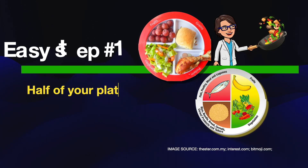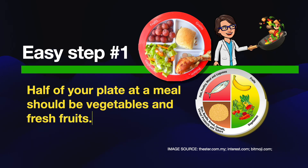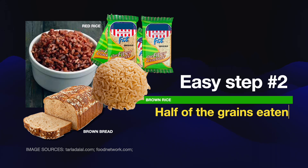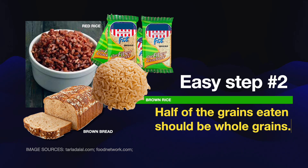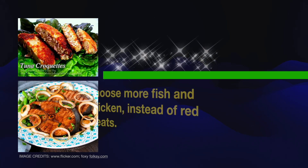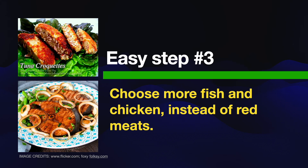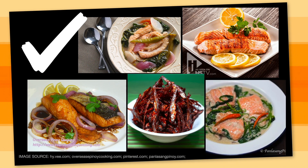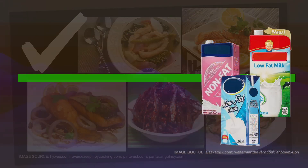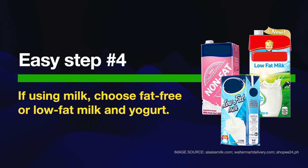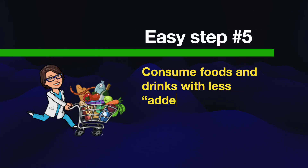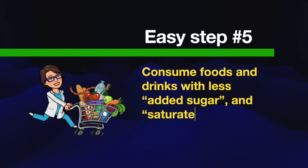Here are more specific tips. Number 1: half of your plate at a meal should be vegetables and fresh fruits. Number 2: half of the grains eaten should be whole grains. Number 3: choose more fish and chicken instead of red meats. Number 4: if consuming milk, choose fat-free or low-fat milk and yogurt. Number 5: consume foods and drinks with less added sugar and saturated fat.